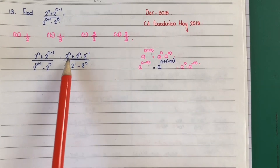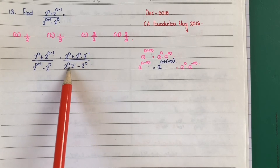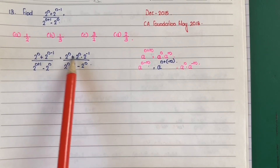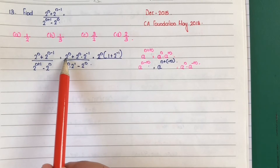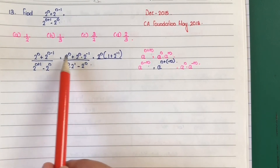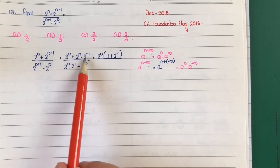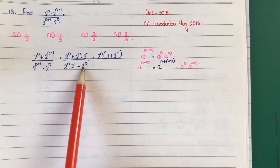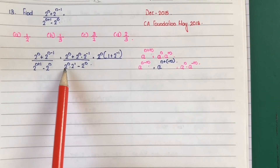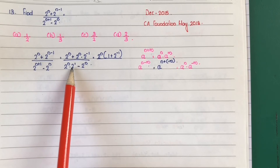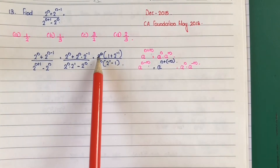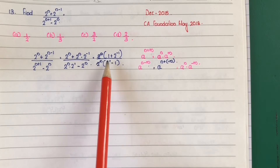Next step, we will take 2 raise to n common outside. Numerator: 2 raise to n outside, giving 1 plus 2 raise to minus 1. Denominator: 2 raise to n outside, giving 2 raise to 1 minus 1.